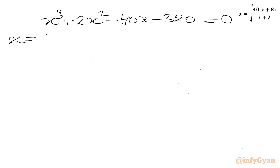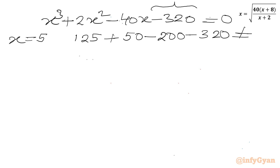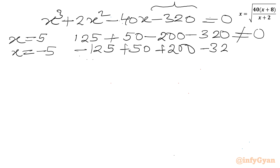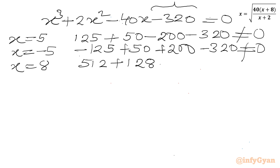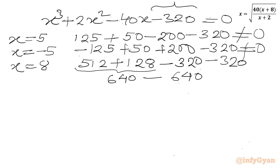Let us plug in x equal to 5: 125 plus 50 minus 200 minus 320 — not satisfied. Plugging in x equal to negative 5: minus 125 plus 50 plus 200 minus 320 — not satisfied. Plugging in x equal to 8: 8 cubed is 512, plus 2 times 64 equals 128, minus 40 times 8 equals 320, minus 320. This gives 640 minus 640, which equals 0. So x equals 8 is our base solution.